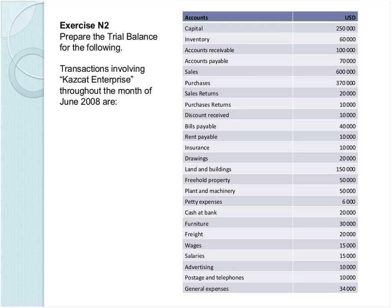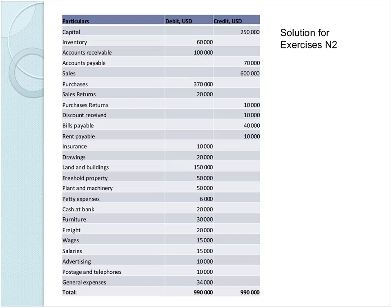We have an equation here. Let me show you the solution. When we do the calculation by debit and credits, we have got 990,000 for the debit and 990,000 for the credit in USD. So we have an equation between debit and credit accounts.